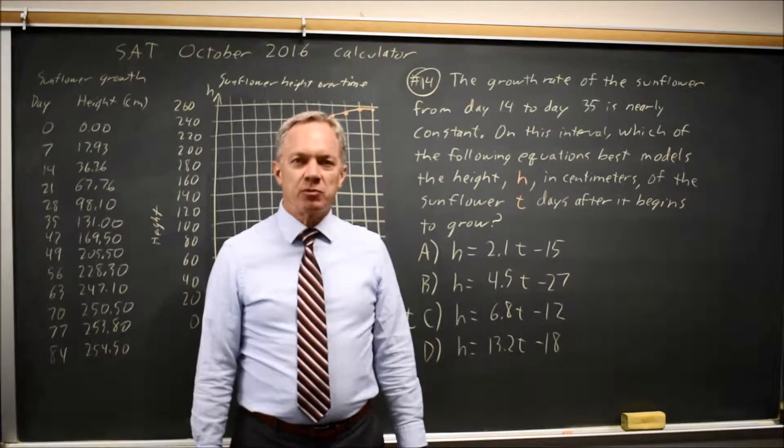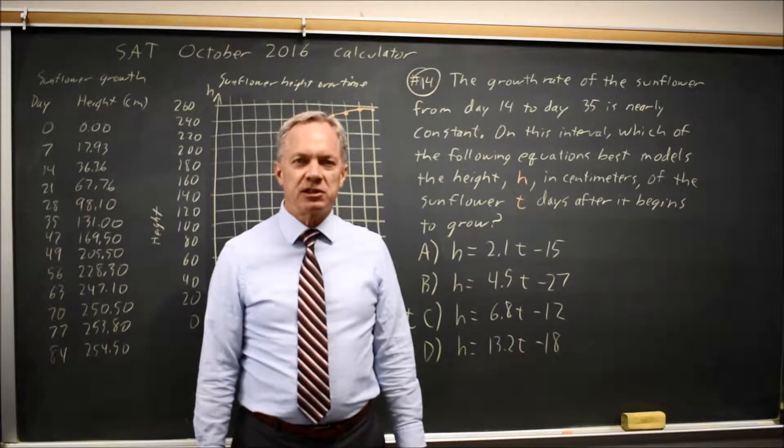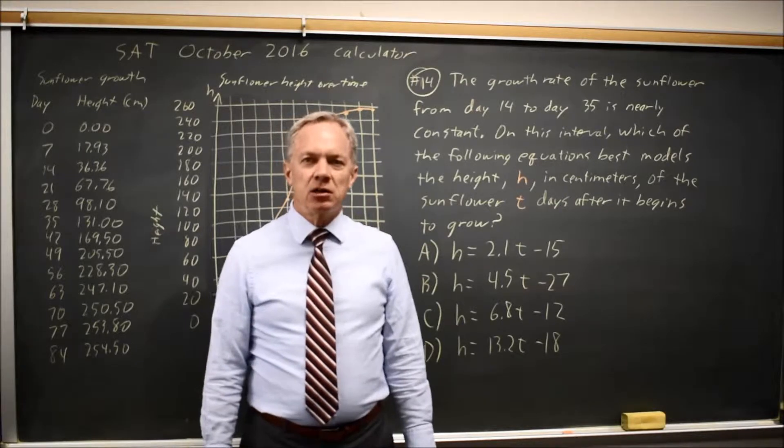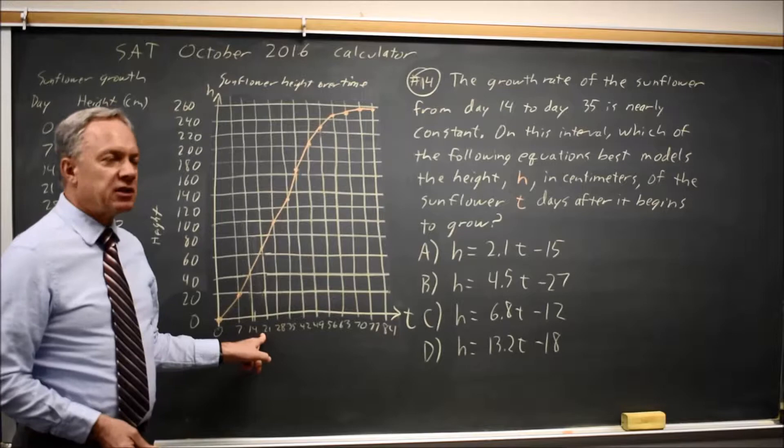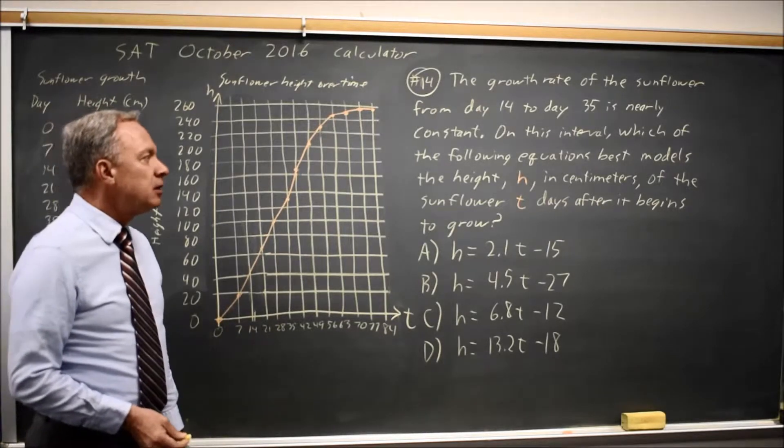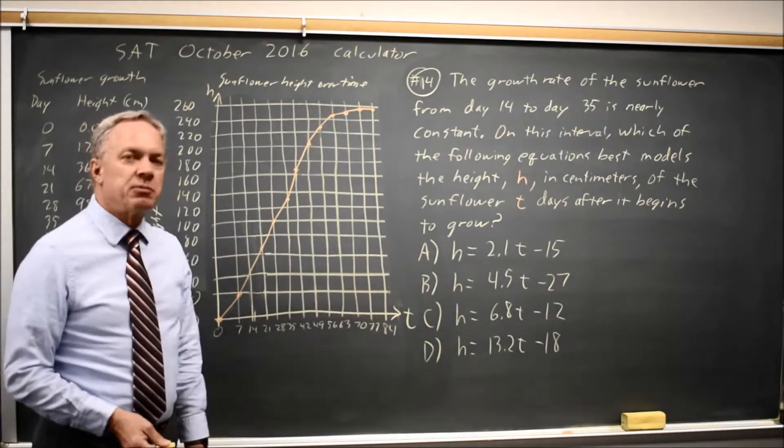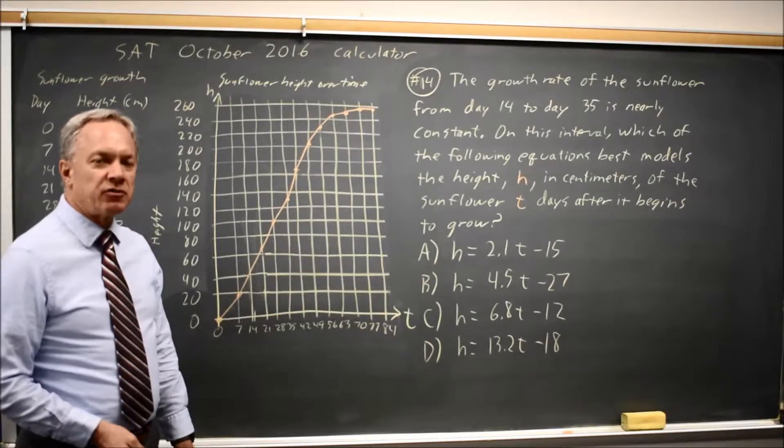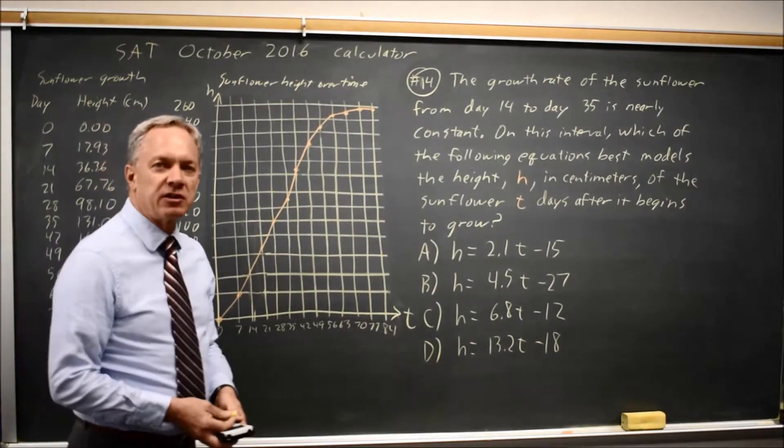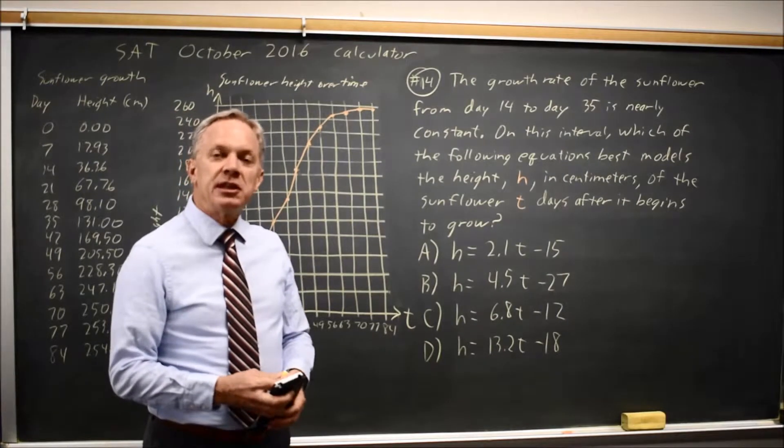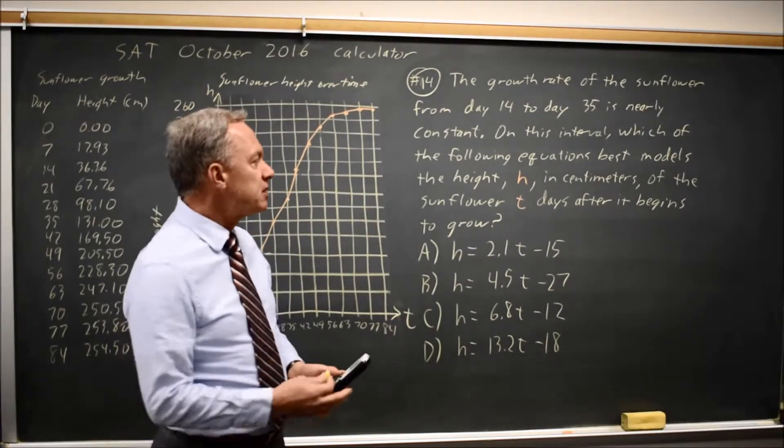This is Calculator Question Number 14 from Practice Test 6, which is also the October 2016 SAT. College Board gives us a table of values and a graph for the height of a sunflower, and they ask which of these four equations best models the height of the sunflower from day 14 to day 35. Two options here: first we can find the slope.